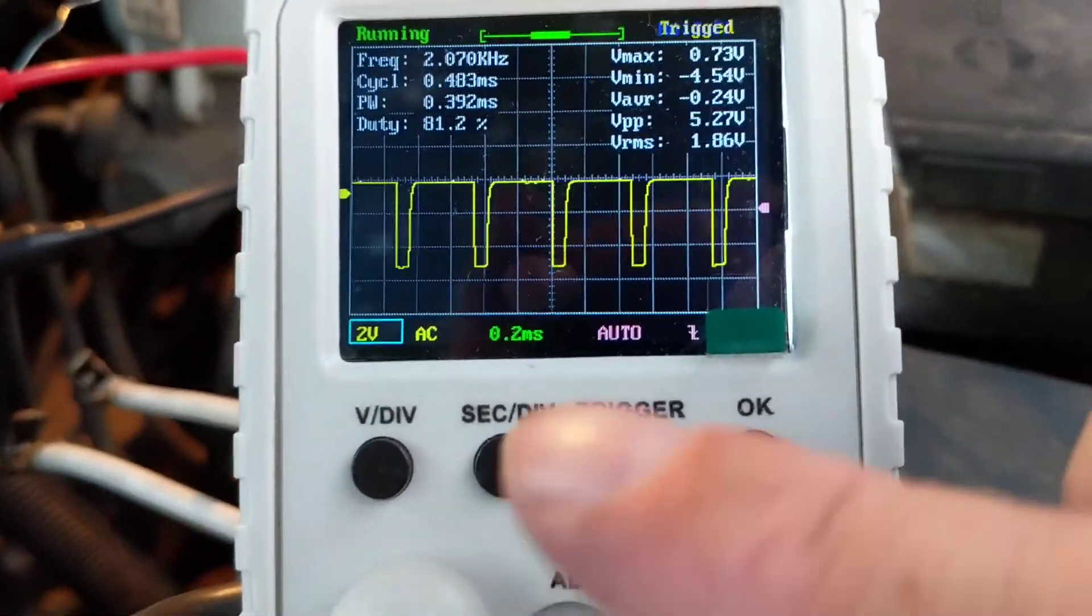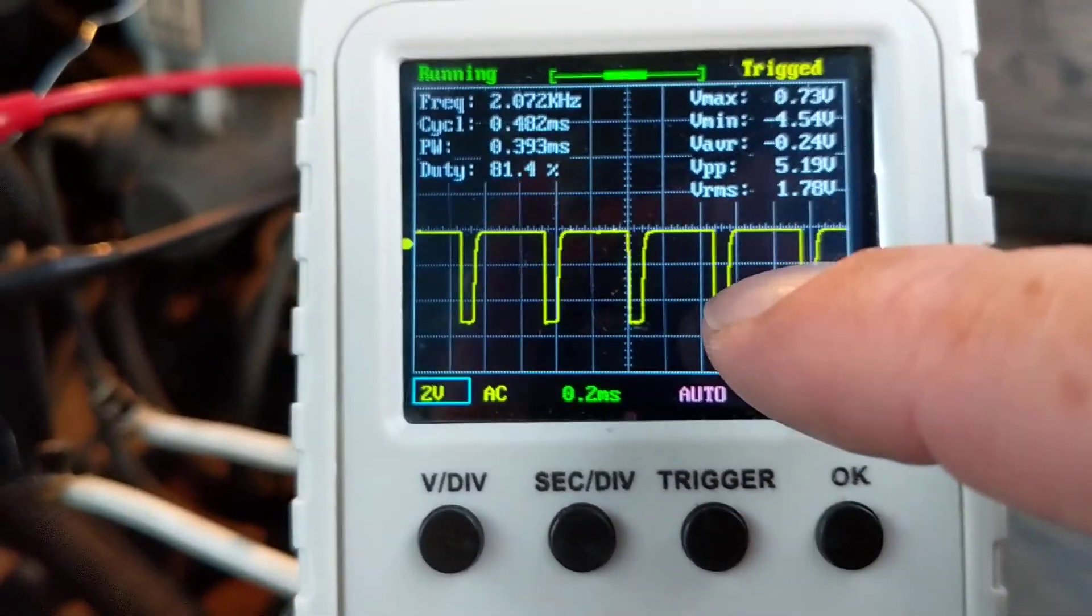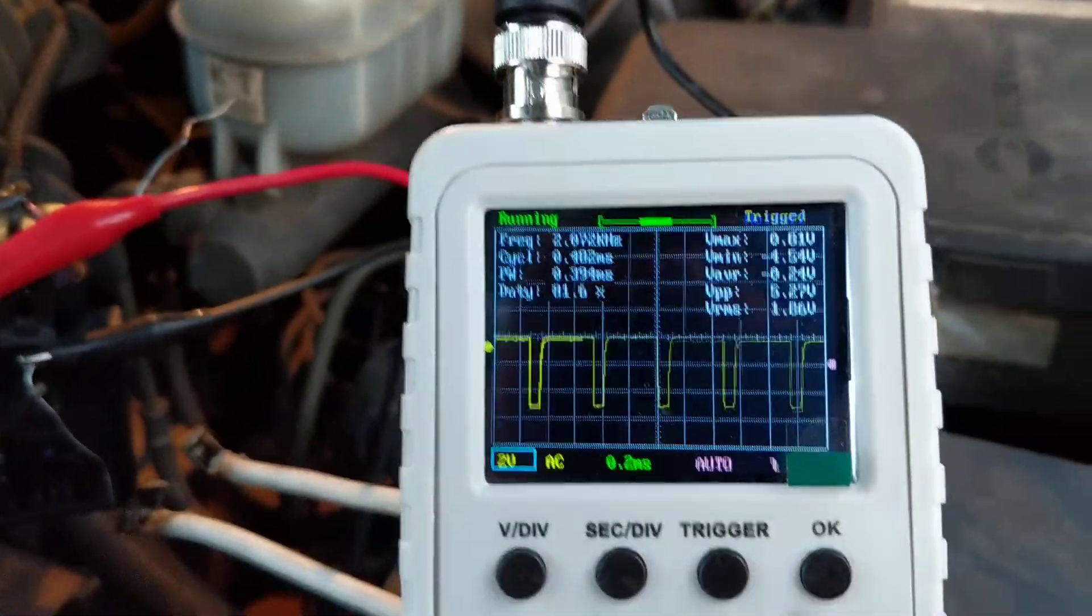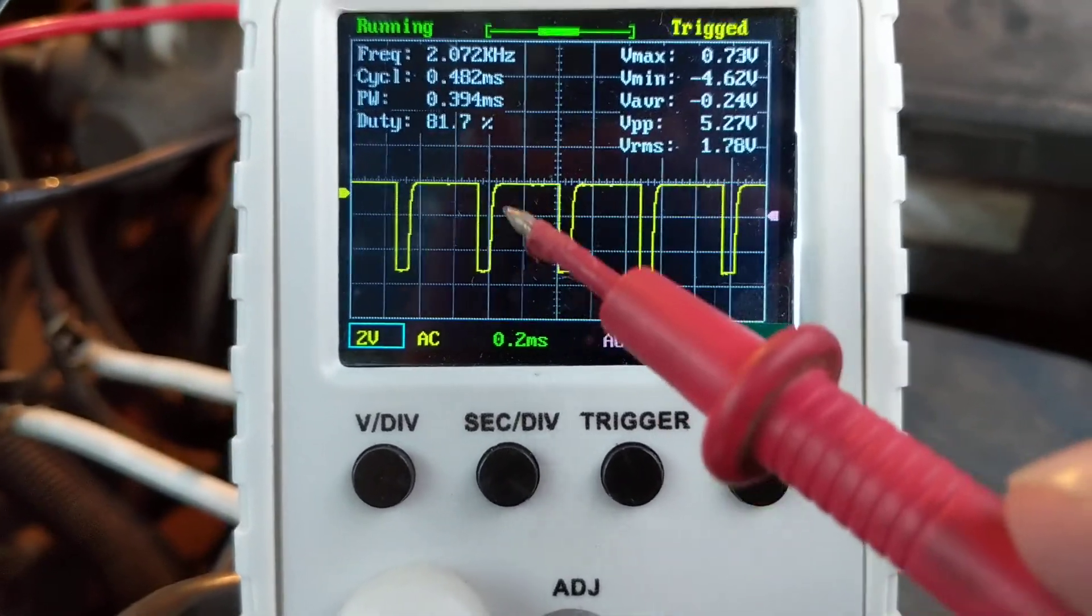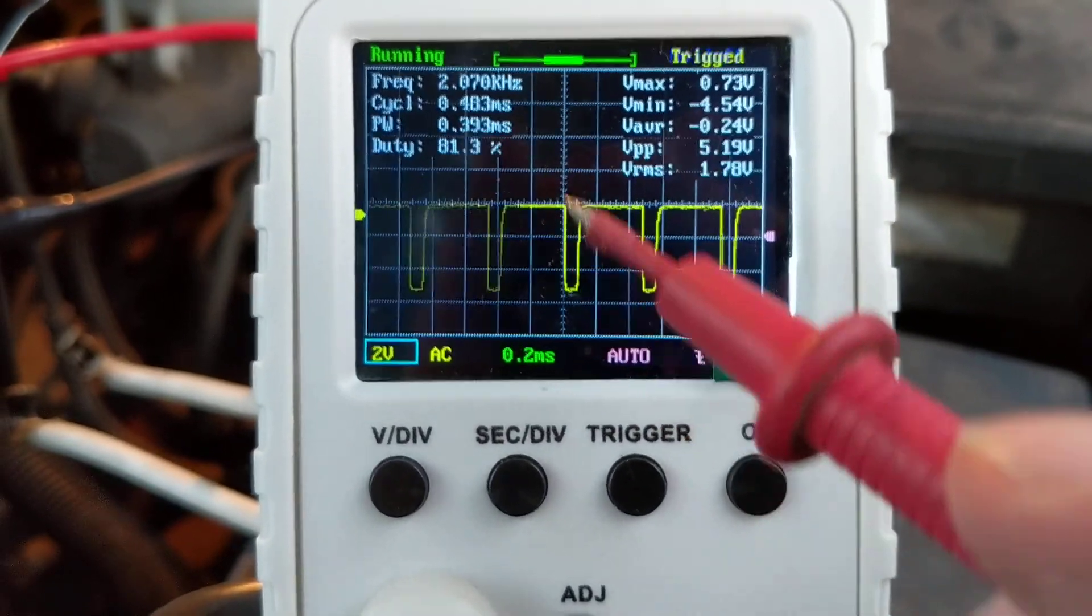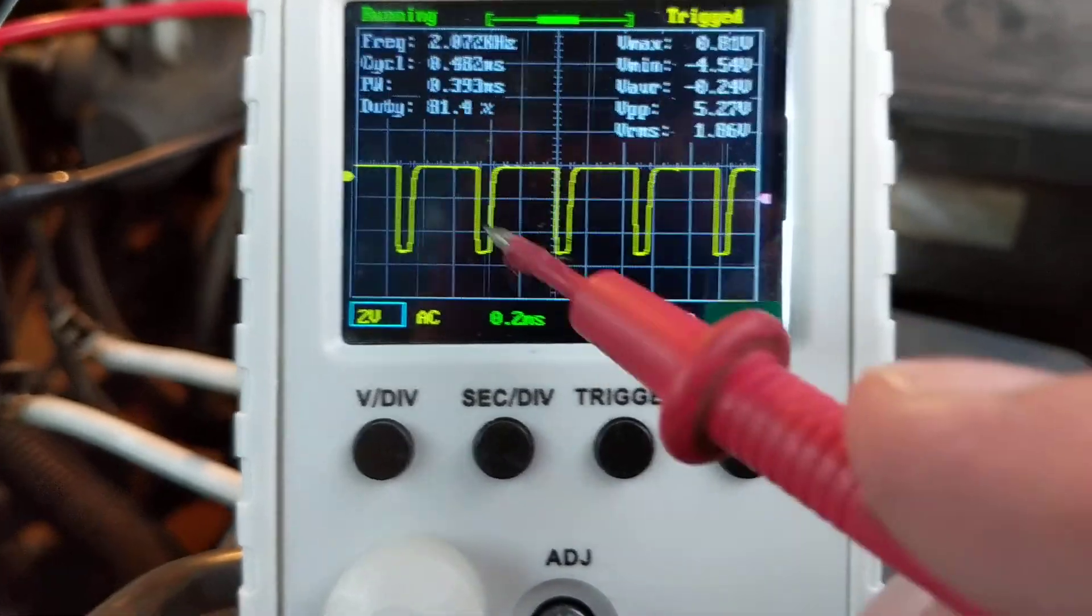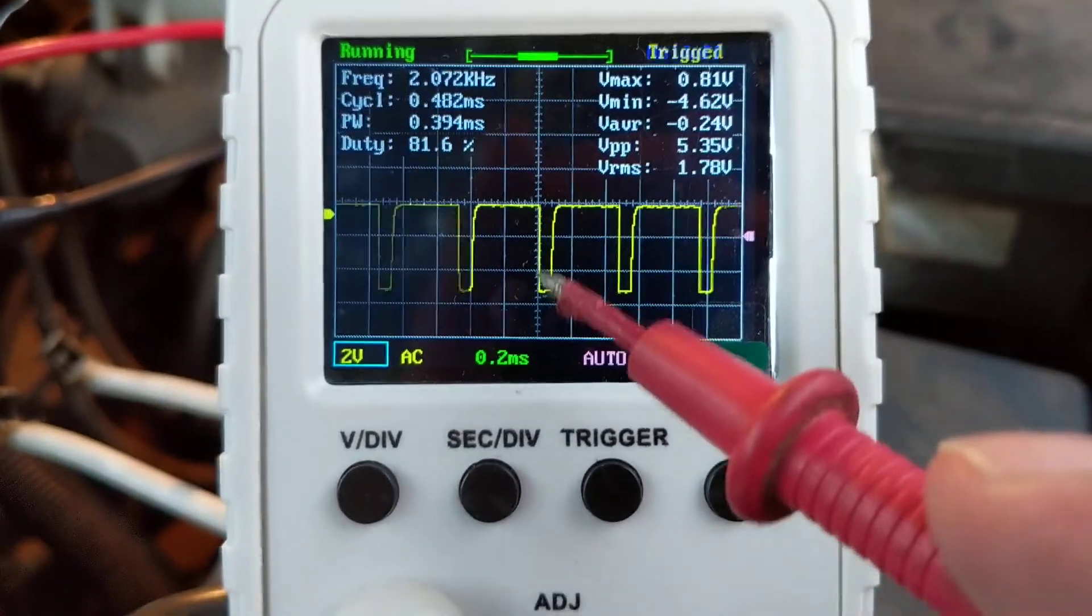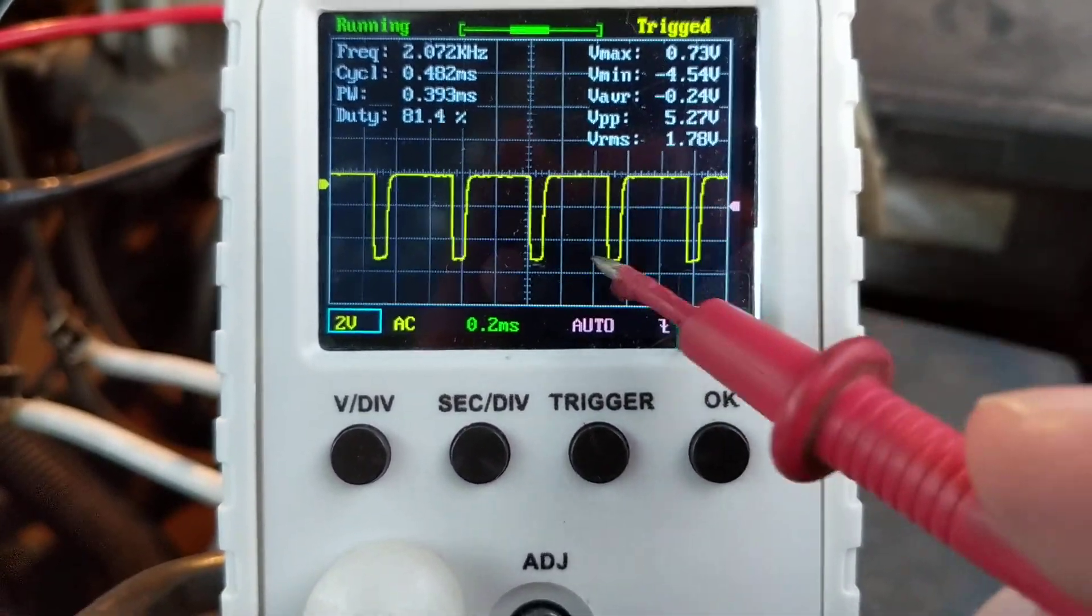So the frequency changed but still it was linear. The problem would be if you would have one pulse here different from the other ones. Then you have a problem with the mass airflow sensor. You saw the frequency change, you saw it compressed together, meaning frequency is getting higher. That's what we're looking for. We're looking for no spikes, we're looking for linearity. They should all be the same and the frequency should go up.